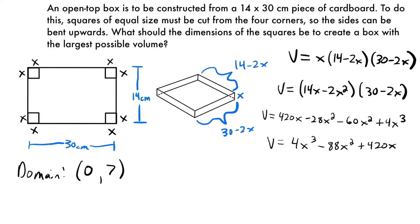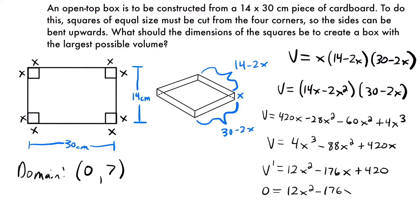Now we take the derivative: V' = 12x squared minus 176x plus 420. Setting this equal to zero: 0 = 12x squared minus 176x plus 420. We can factor out a 4, giving 0 = 4(3x squared minus 44x plus 105).